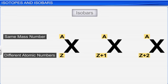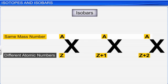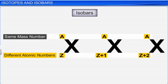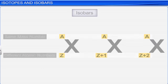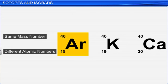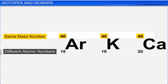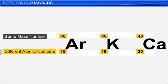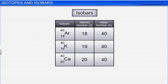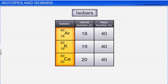Some atoms of different elements are found to have the same mass number but different atomic numbers. For example, 18Ar40, 19K40, and 20Ca40 have the same mass numbers but different atomic numbers. Such atoms of different elements having different atomic numbers but the same mass number are called isobars. Isobars have different chemical properties because they have different atomic numbers.